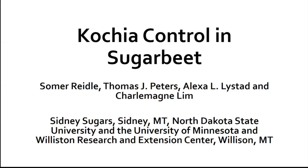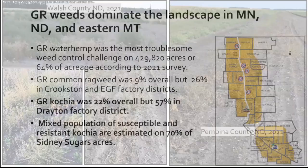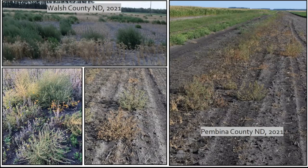Grower surveys sent out by extension programs help us understand on-farm production challenges. Over recent years, glyphosate resistance in weeds has been a growing problem. In the valley, glyphosate-resistant waterhemp is a major issue throughout, but as you move north, common ragweed becomes an issue in Crookston and Grand Forks. Up at Drayton, kochia is reported on 57% of the acreage. Out in the Sydney growing area, about 70% of sugar beet acres are affected by kochia. Kochia is synonymous with dry years, and in 2021 and 2022 we had our challenges with drought, leading to poor small grain stands and lack of competition to crowd out the kochia.